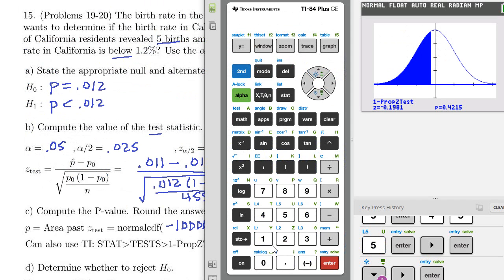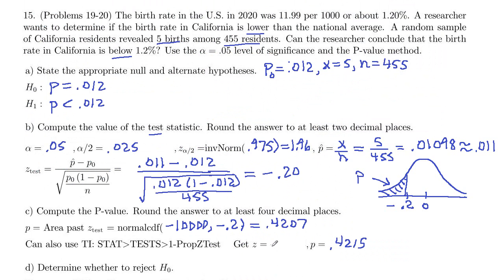And our z-score, negative 0.1981. So there is our p-value.